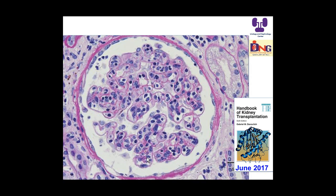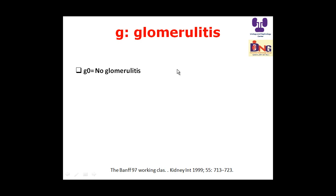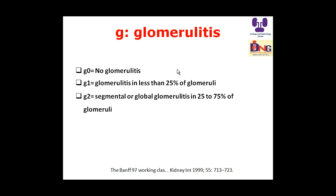Glomerulitis scoring: the capillaries of the glomeruli are full of inflammation. G0 means no glomerulitis; G1 means glomerulitis in less than 25% of glomeruli; G2 means global glomerulitis in 25–75% of glomeruli; G3 means mostly global glomerulitis in more than 75% of glomeruli.